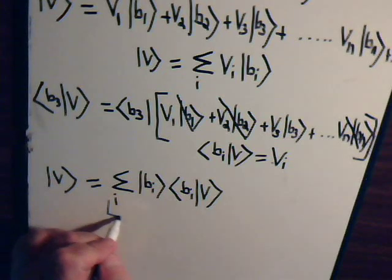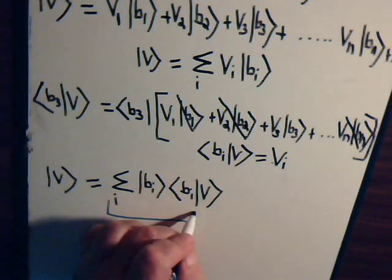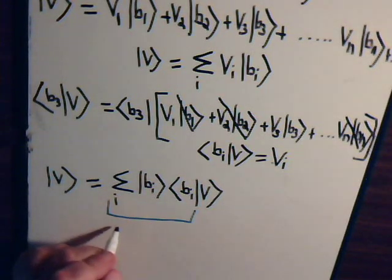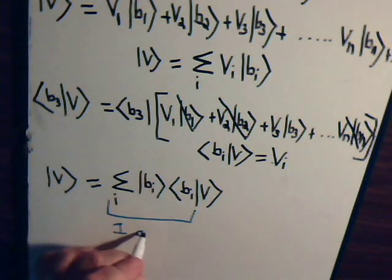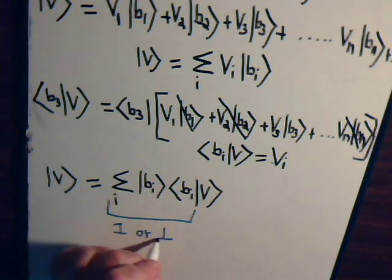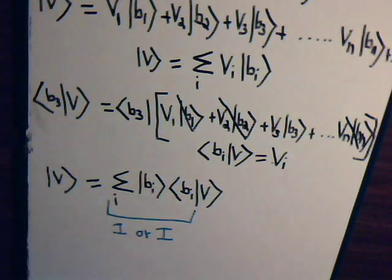They will either say it is one or the identity operator. So that in a nutshell then is how that is derived.